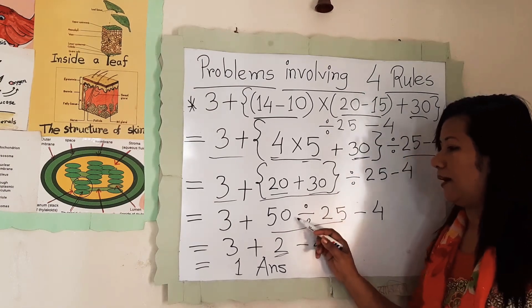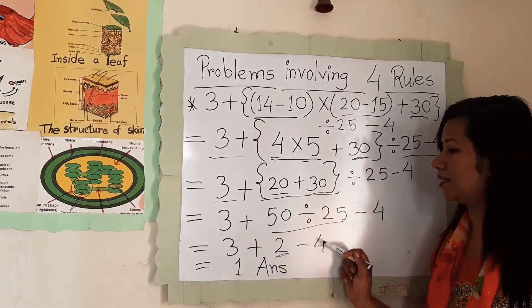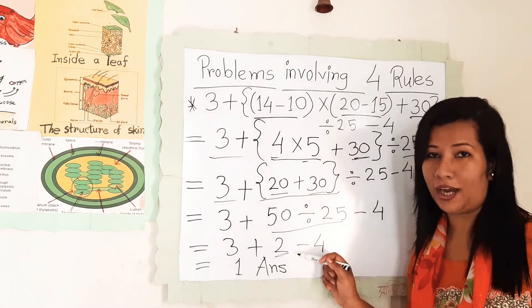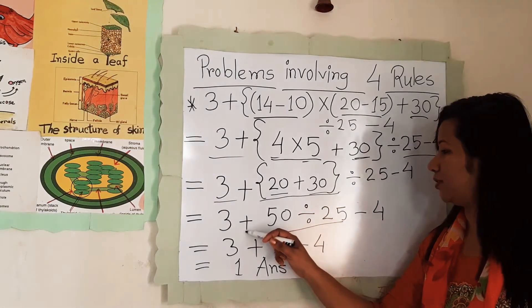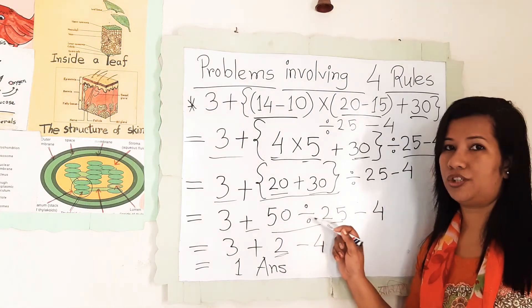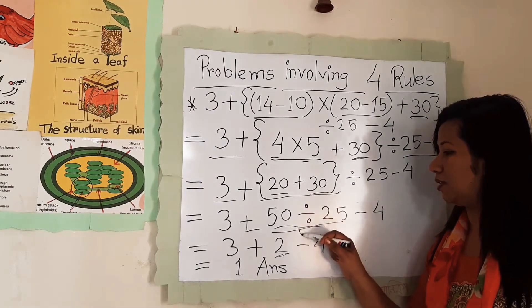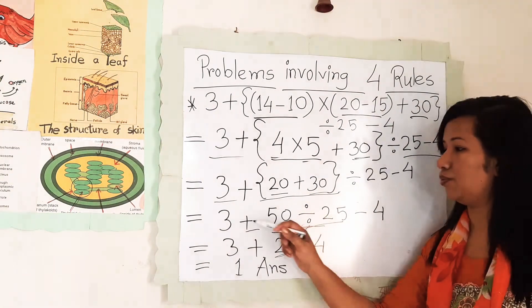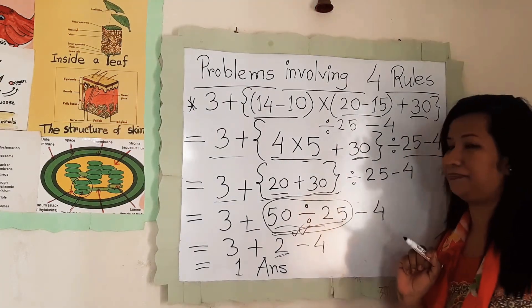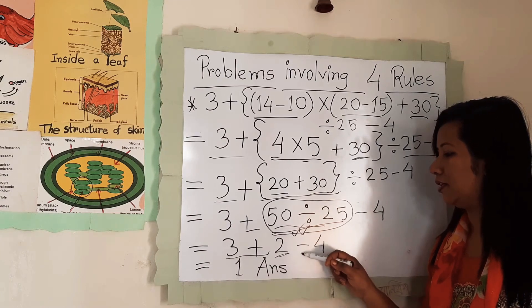So here is 3 plus 2. In this case, you start with left to right, and whenever you see addition, subtraction, and division, you start with division. Sometimes it's very confusing which one to start, so you start with division, then you go left to right.